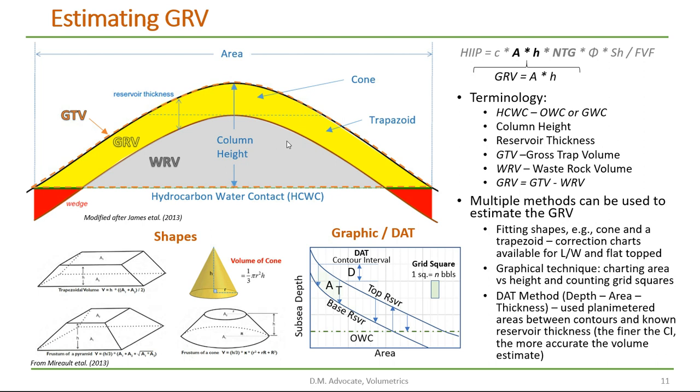But first let's go through some of the terminology. The area of the hydrocarbon accumulation is limited by the hydrocarbon water contact where it intersects the top of the reservoir. The length from the oil water contact to the highest point of the trap is called the column height.